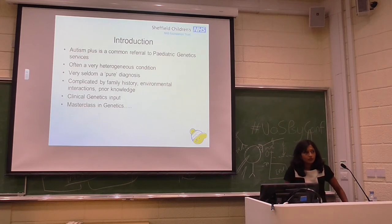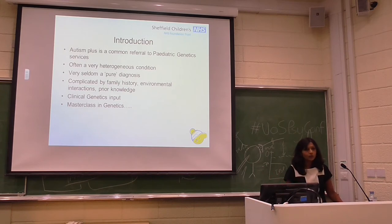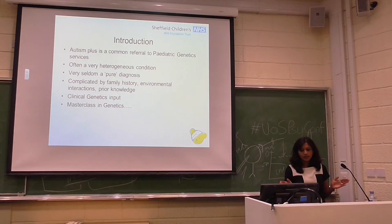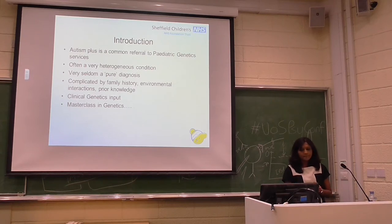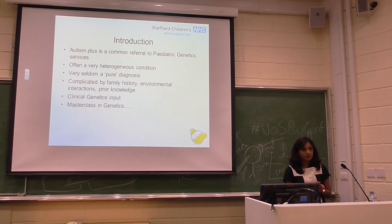By way of introduction, what I'd say is 'autism plus' — autism with other presenting features — is quite a common referral that we see in paediatric genetic services. However, it's often a very heterogeneous condition, and it's very seldom a pure diagnosis. Very rarely do we see just non-syndromic autism; there's often other things going on. It's complicated by what's happening in the family history, environmental interactions, prior knowledge, etc. In these situations, clinical genetics input is requested to try and tease out what's happening and can we come up with a unifying genetic diagnosis.